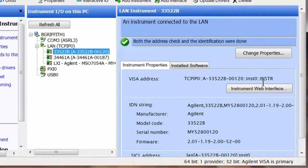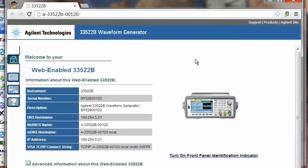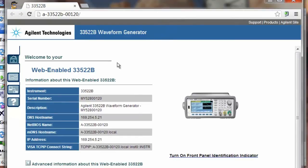If we want to bring up the instrument's interface, we can go ahead and do that either using the VISA address or we can enter the IP address. So I'm going to go ahead and bring up the interface for our function generator. So I'm going to click on the instrument web interface. And again, this works with any web browser.